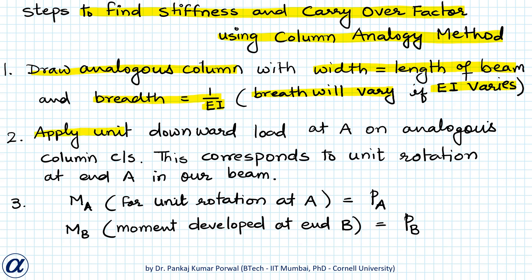The second step is to apply a unit downward load at A on the analogous column cross section. This unit downward load corresponds to unit rotation at end A in our beam. The moment MA required to produce that unit rotation at end A of the beam equals the pressure PA developed under the analogous column at edge A.